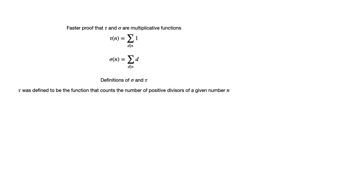Tau is defined to be the function that counts the number of positive divisors of a given number n. Hence if we add 1 as many times as there exist divisors of n, the answer we will retrieve will be precisely tau of n. This is the meaning of the first equation. The second says that in place of adding 1 we add the divisors of n. This is the definition of sigma and so this second equation does indeed equal it.